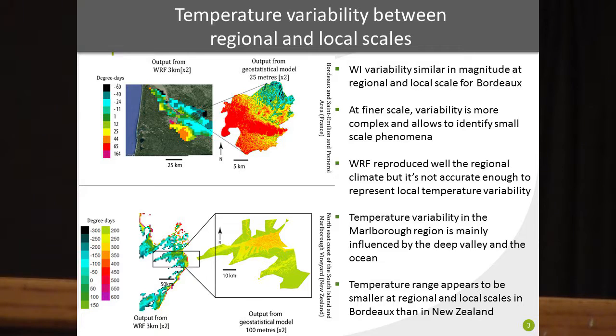The WRF model reproduces regional climate well, but it is not accurate enough to represent the local temperature variability. Comparing Saint-Emilion to the Marlborough Valley, the temperature range appears to be smaller at regional and local scale in Bordeaux than in New Zealand, due to the topography which is flatter in Bordeaux. The temperature variability in the Marlborough region is mainly influenced by the deep valley and the ocean.